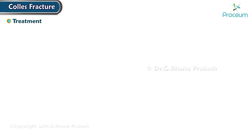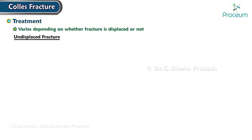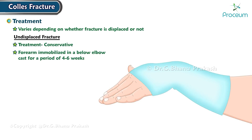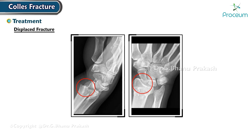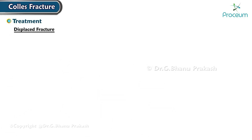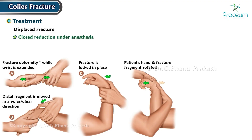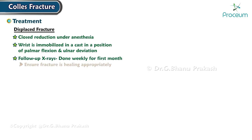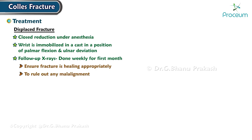Treatment for Collis fracture varies depending on whether the fracture is displaced or not. If undisplaced, treatment is usually conservative, with the forearm immobilized in a below-elbow cast for 4 to 6 weeks. If displaced, treatment involves closed reduction under anesthesia, after which the wrist is immobilized in a cast in a position of palmar flexion and ulnar deviation. Follow-up X-rays are done weekly for the first month to ensure appropriate healing and to rule out any malalignment.